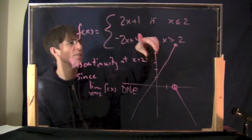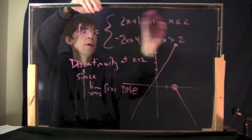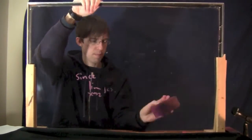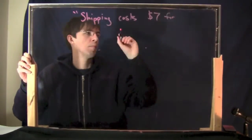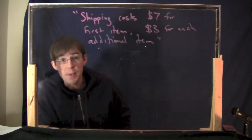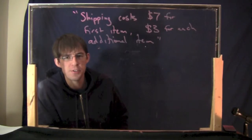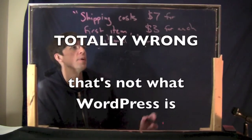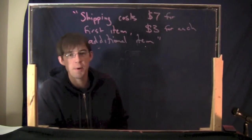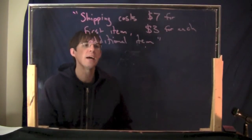It is a little weird to have functions defined in two pieces, but actually this happens all the time in the real world. Here's a quick real-world example. I was just looking at a website — this is a true story. The shipping costs: $7 for the first item, $3 for each additional item. I'm sure you've seen things like this before. This actually describes a piecewise kind of a function.